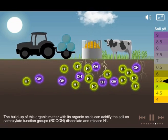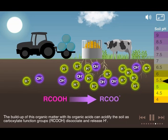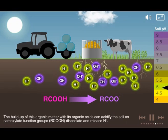The build-up of organic matter with its organic acids can acidify the soil as carboxylate functional groups dissociate and release hydrogen ions.